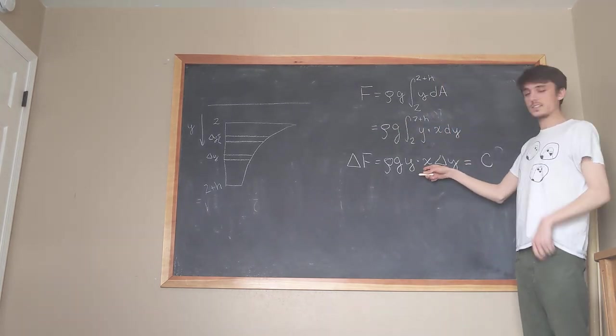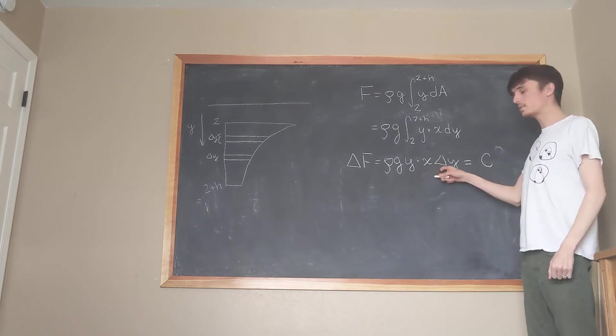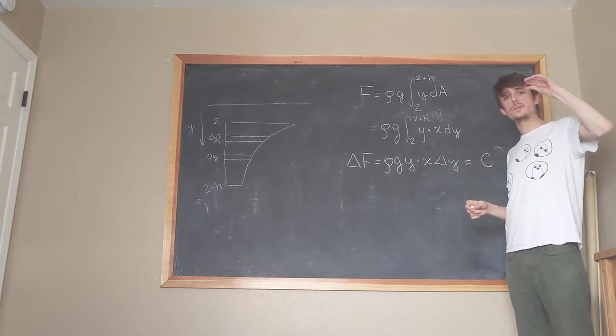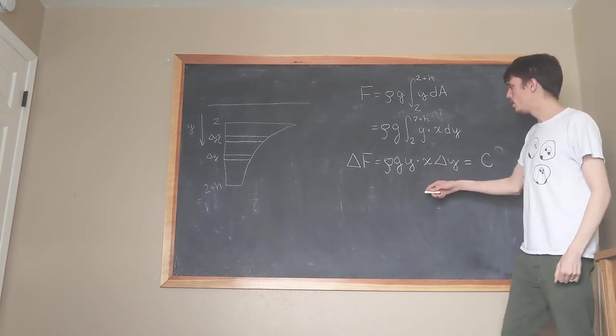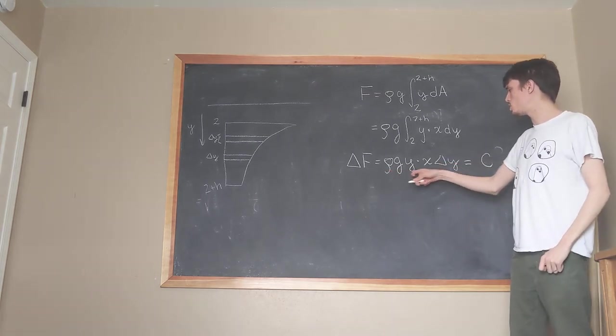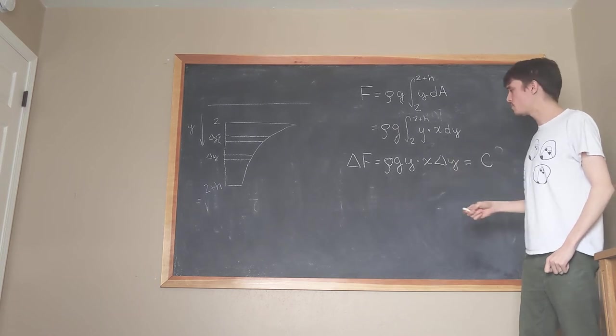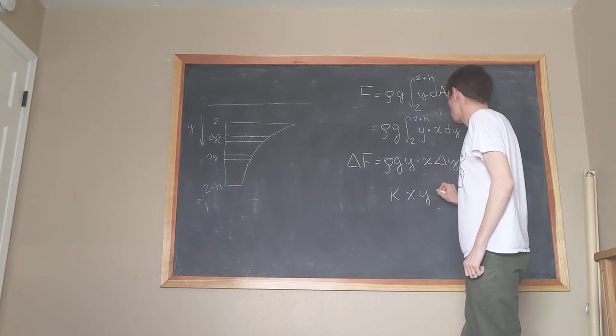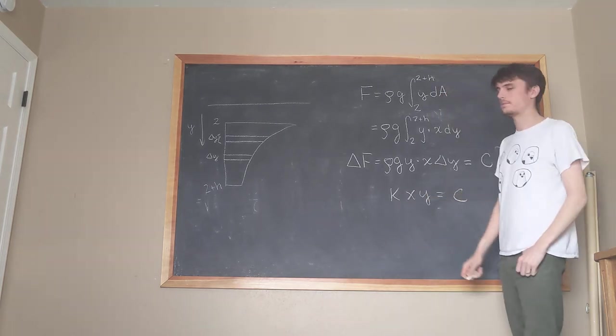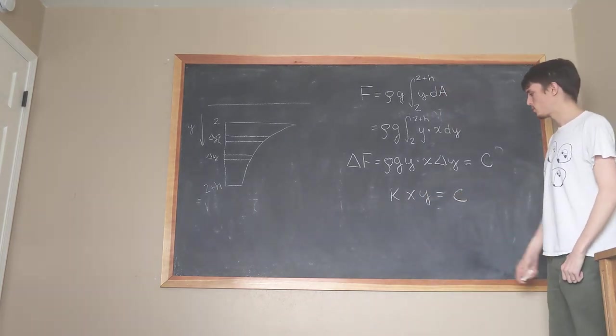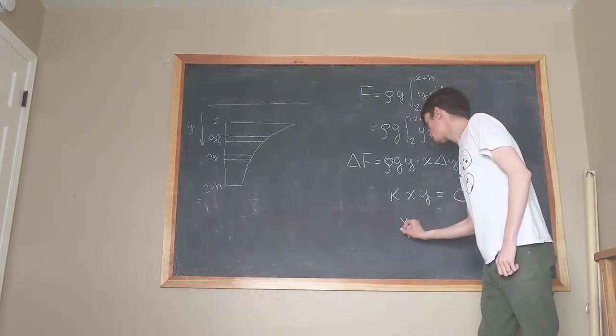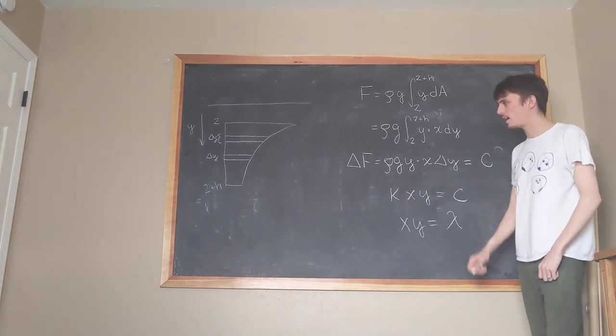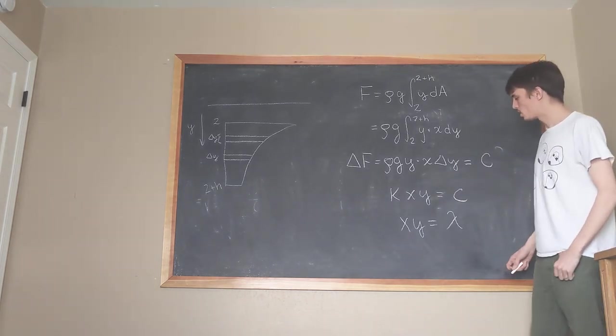x is not constant, that's not constant. y is not constant. Δy actually is constant, right? We want all of these strips to be the same height. So what I can do is I can take ρ times g times Δy and I can make that a single constant that I'm going to call k times x times y is equal to c. And then divide both sides by k and get a new constant. x times y is going to equal λ, everyone's favorite constant in mathematics.